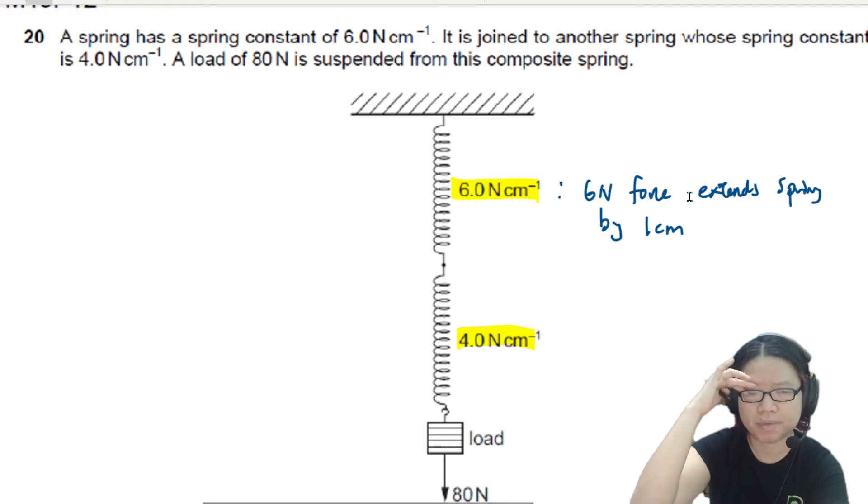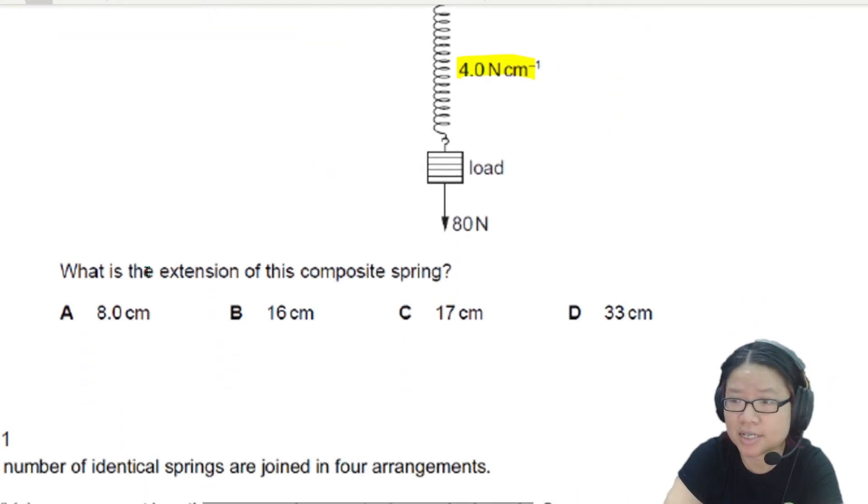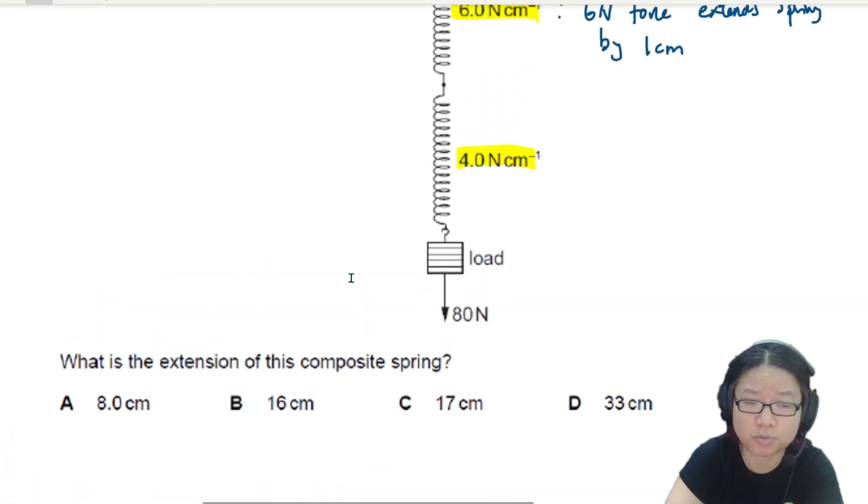So we have two different springs and a load of 80 N suspended from this composite spring. So the question is asking us, what is the extension of this composite spring?